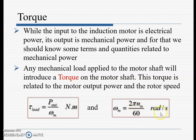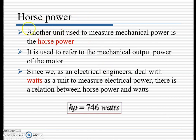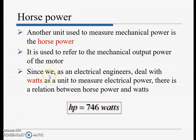Here, n_m is the speed of the motor measured in radians per second. Another unit used to measure mechanical power is the horsepower, used to refer to the mechanical output power of the motor. Since we as electrical engineers deal with watts to measure electrical power, there is a relation between horsepower and watts: 1 HP = 746 watts.